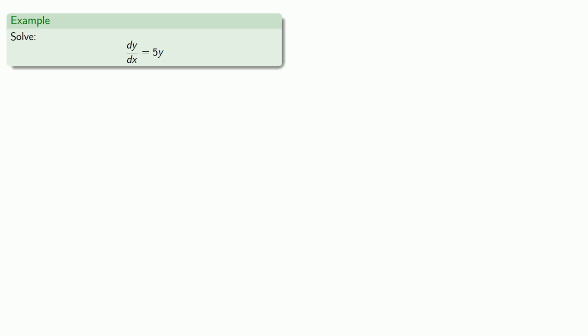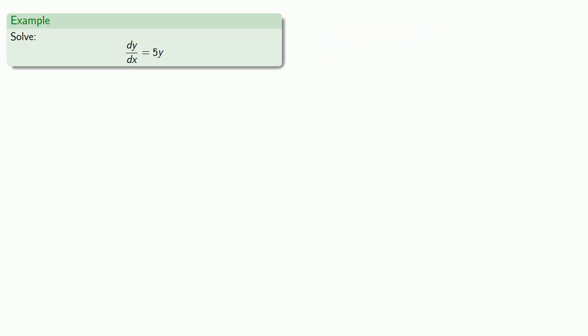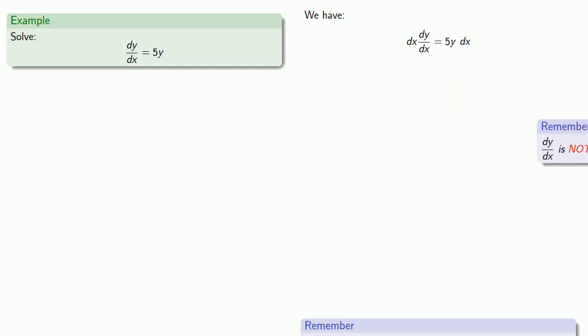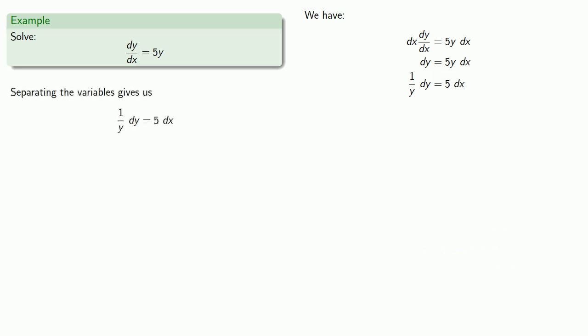So let's try to solve the differential equation dy over dx equals 5y. The idea is we want to separate the variables — all the x variables on one side, all the y variables on the other, and constants will end up on one side or the other. From our differential equation, we'll multiply both sides by dx. Again, dy over dx is not a fraction, but it's sometimes helpful to view it as one. We can simplify, and since there is a y on the right-hand side, we want to get that over onto the left. Separating the variables gives us the equation one over y dy equals 5 dx.